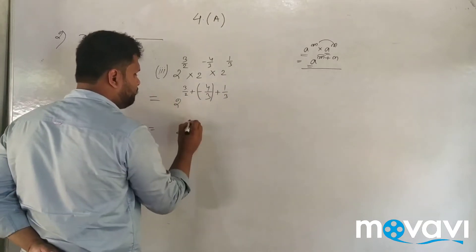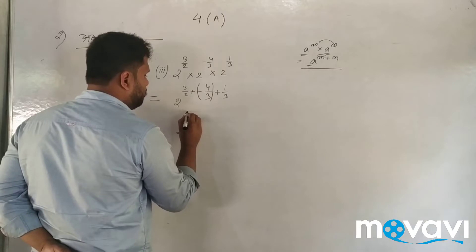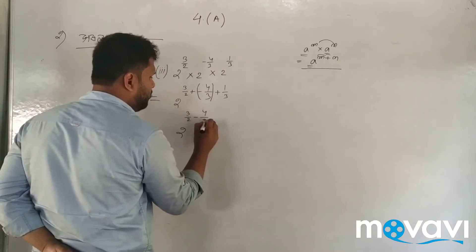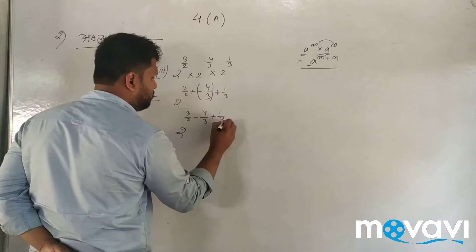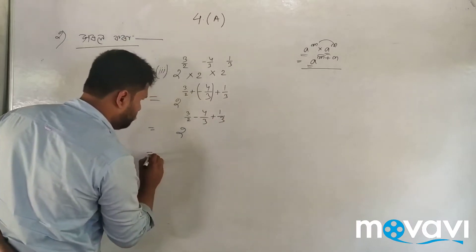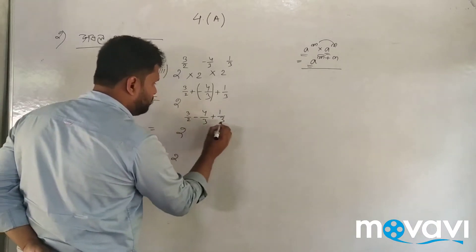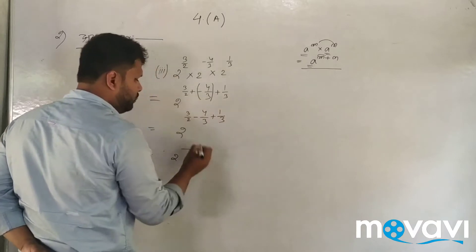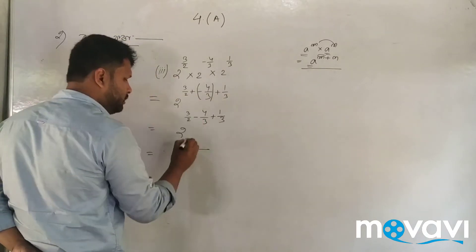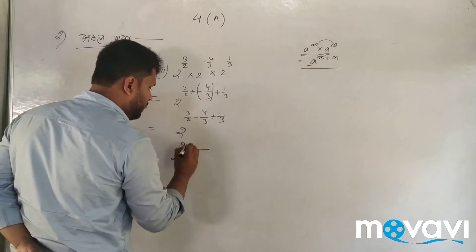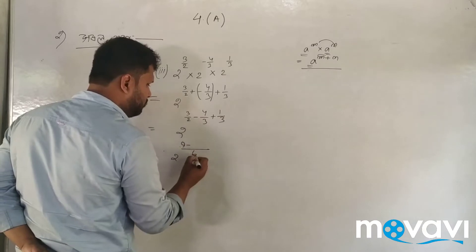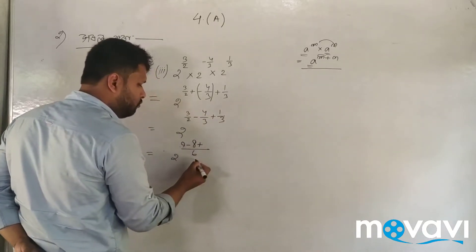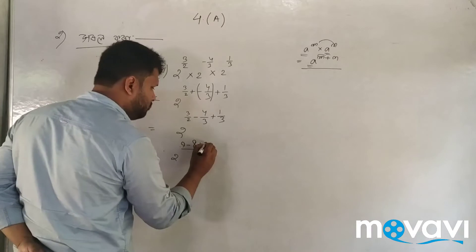Minus 4 by 3 plus 1 by 3 gives minus 3 by 3, which equals minus 1. So we have 2 to the power 3 by 2 into 2 to the power minus 1. That gives us 2 to the power of 3 by 2 minus 1, which is 2 to the power of 1 by 2. And 2 to the power of 1 by 2 equals root 2.